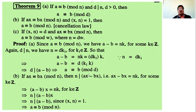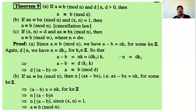Given ax is congruent to bx modulo n, by the definition of congruence, n divides ax minus bx. Therefore a minus bx is expressed in the form n into some integer k. Also given is that gcd(x, n) equals 1. So n divides ax minus bx, which means n divides x times (a minus b). Therefore n divides a minus b into x.